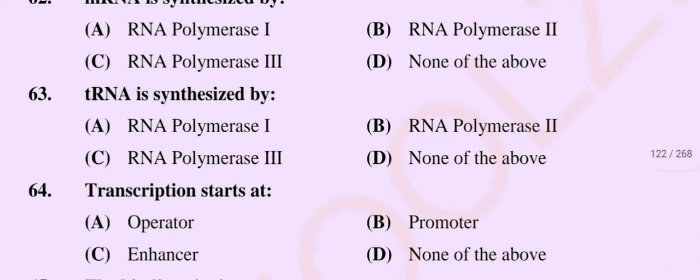Question number 63: Transfer RNA is synthesized by — Option A: RNA polymerase 1, Option B: RNA polymerase 2, Option C: RNA polymerase 3, Option D: none of the above. So the correct option is Option C, RNA polymerase 3.